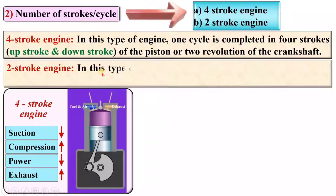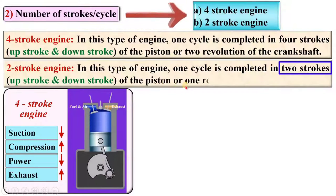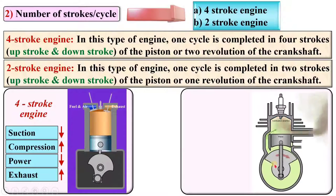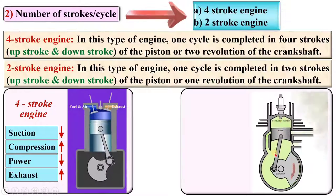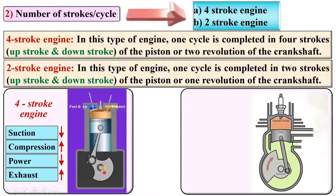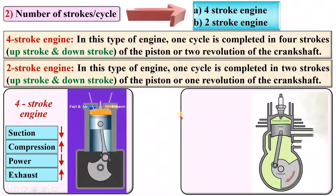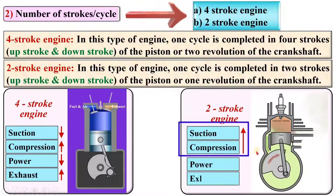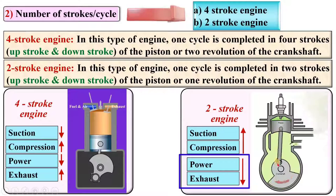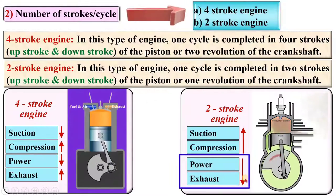In a two-stroke engine, one cycle is completed in two strokes — meaning upstroke and downstroke of the piston, or one revolution of the crankshaft. In a four-stroke engine there are two revolutions of the crankshaft per cycle. In a two-stroke engine, the suction and compression strokes both occur during the upward movement of the piston, while the power and exhaust strokes both occur during the downward movement of the piston.